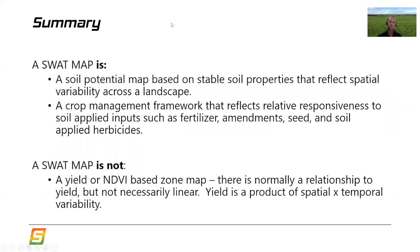In summary, a SWAT map is a soil potential map — that's what we like to call it. It's based on stable soil properties that reflect the spatial variability across the landscape. It really becomes the crop management framework that reflects the relative responsiveness to essentially all soil applied inputs: fertilizer, amendments like lime, manure, compost, seed, and even soil applied herbicides.